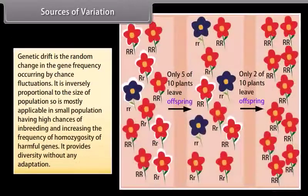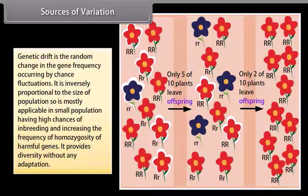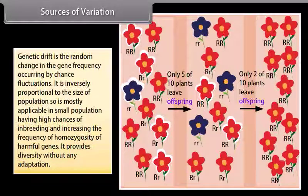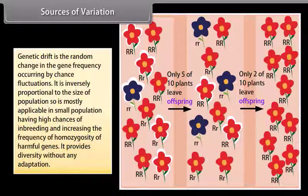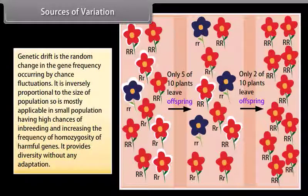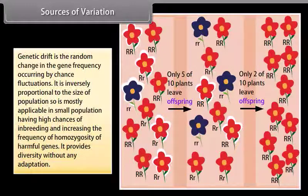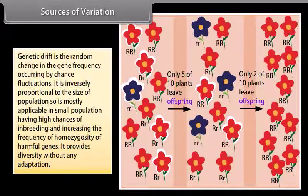Genetic drift is the random change in the gene frequency occurring by chance fluctuations. It is inversely proportional to the size of population, so is mostly applicable in small populations, having high chances of inbreeding and increasing the frequency of homozygosity of harmful genes. It provides diversity without any adaptation.